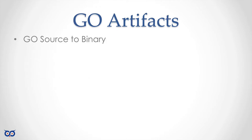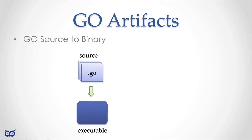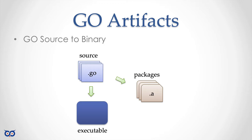In Go, you write source code and that gets compiled into binaries. Go is a compiled language, so you feed source code to a compiler and the compiler produces a binary. Your source code could be turned into an executable binary — a program you can run — or it could be turned into a package. Packages can be reused in your executables.